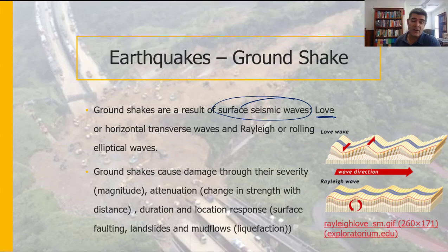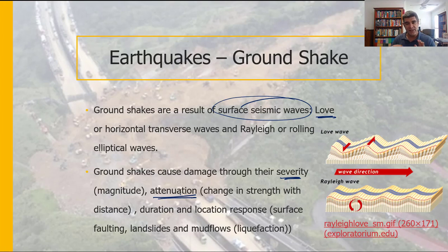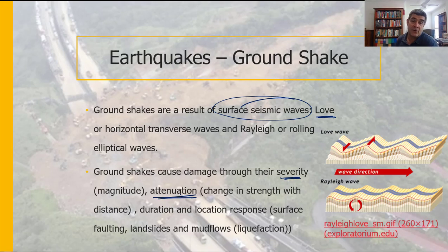One of the things we want to do with ground shakes is to measure the damage, or at least the potential for damage, on the basis of four important criteria. Those four criteria are: severity, which we talked about in earthquake magnitudes in the previous video; and attenuation, which is basically how long it takes for the intensity of something to drop. As the earthquake wave radiates out from the focus, some of that energy is lost — similar to screaming across a field, where the energy dissipates further from the source. That's what we mean by attenuation: how much the strength of these waves diminishes over distance.